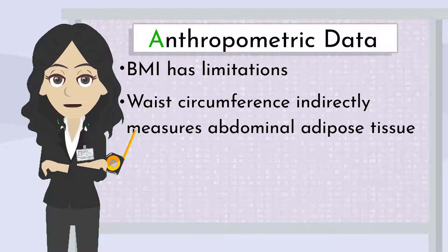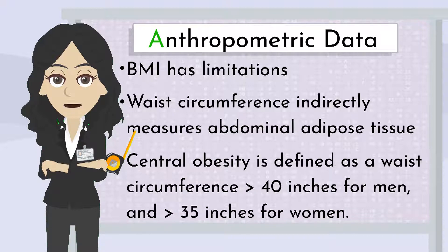Waist circumference indirectly measures abdominal adipose tissue. All PAs need is a tape measure to obtain this essential data. Central obesity is defined as a waist circumference greater than 40 inches for men and greater than 35 inches for women, and that varies with ethnicity.